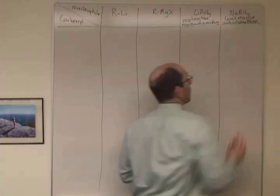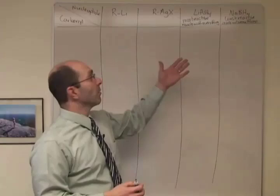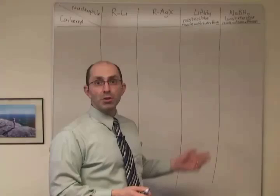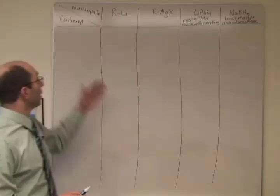In your reading of the book, you should be able to figure out what sodium borohydride reacts with and what it doesn't. And where it doesn't react, that's a box in your column where you just write no reaction. So these are all of our nucleophiles.